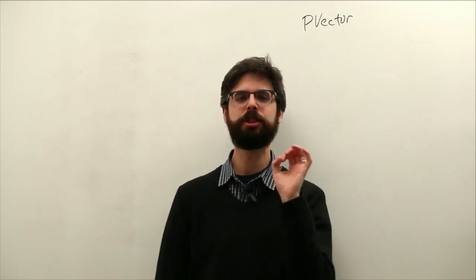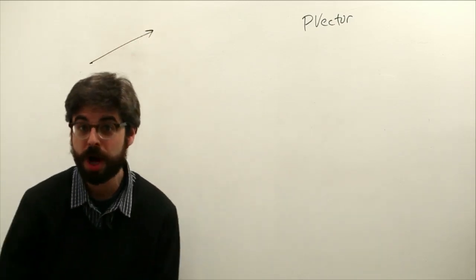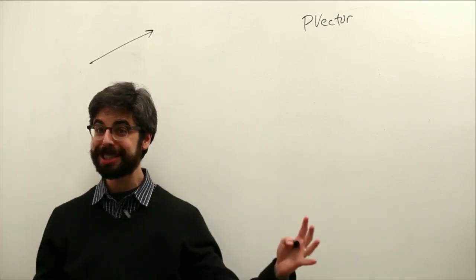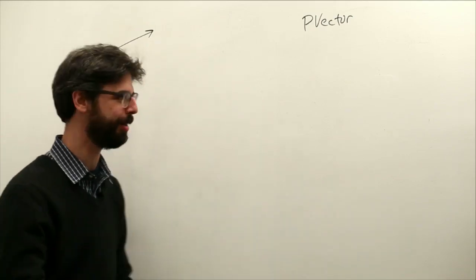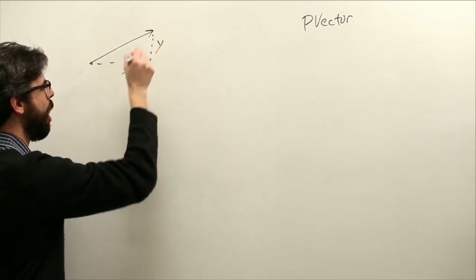PVector is going to store the components of a vector. If you remember from the previous video, a vector which can be represented as an arrow, direction, which way the arrow pointing, magnitude, how long is that arrow, has components. There is an x component and a y component.